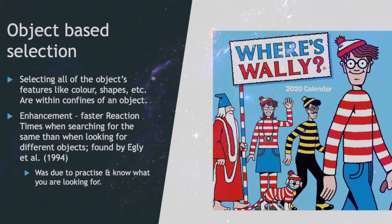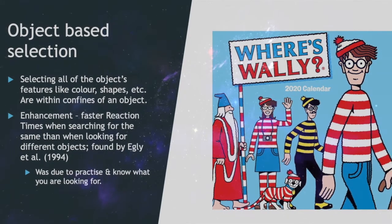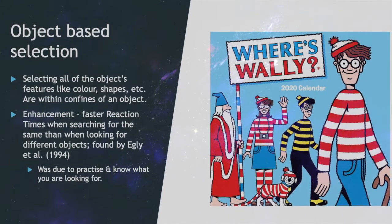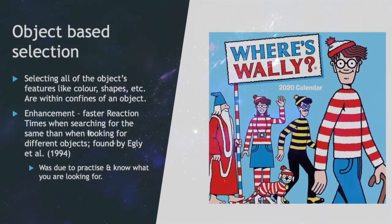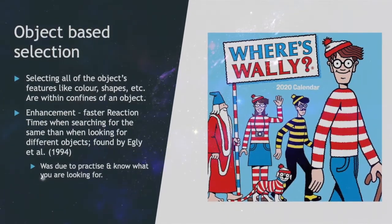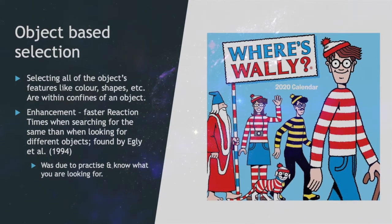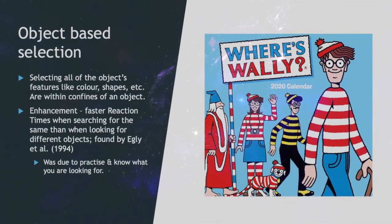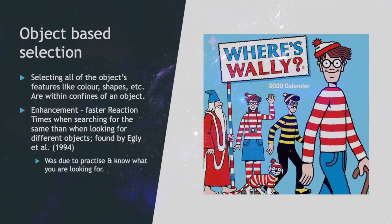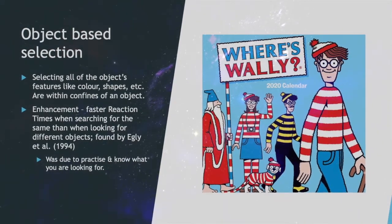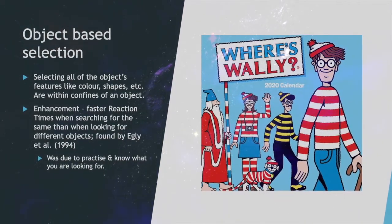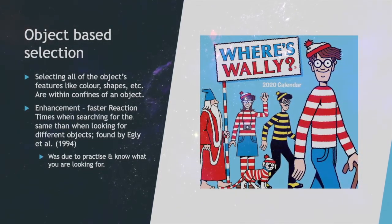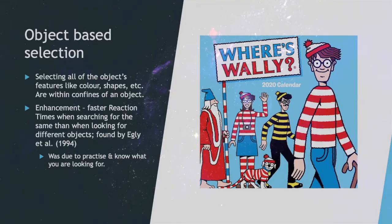Object-Based Selection is selecting all of an object's features, like color, shape, etc., within the set confines of an object. Enhancement is when faster reaction times occur when searching for the same thing compared to searching for different objects. This was found by Egly et al. 1994, and may be due to practice effects, since individuals know what to look for and become trained — just like finding WALL-E in Where's WALL-E.